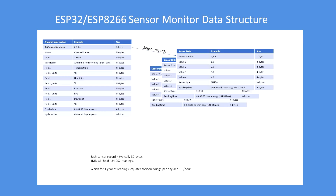In terms of storage, it's four bytes per value. For example, a temperature of 20 degrees Celsius is stored in a four-byte variable. This enables you to work out the sizing required for long-term data logging.